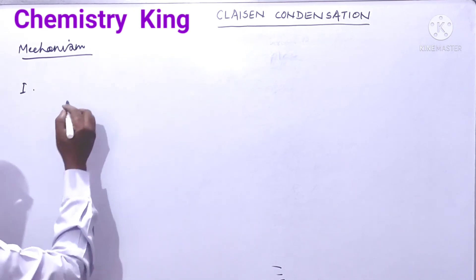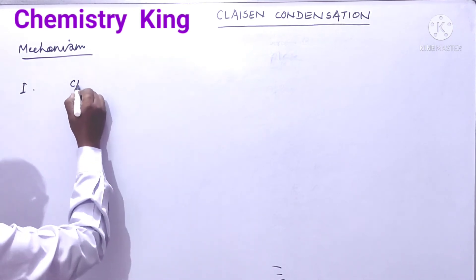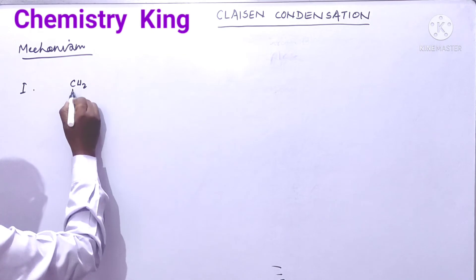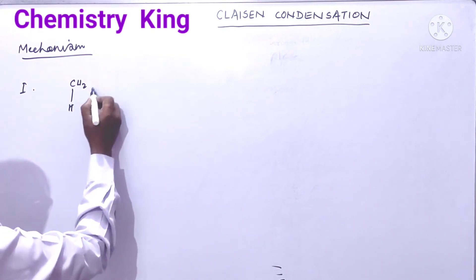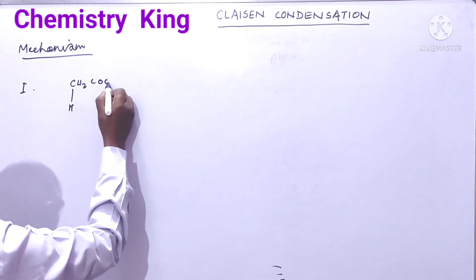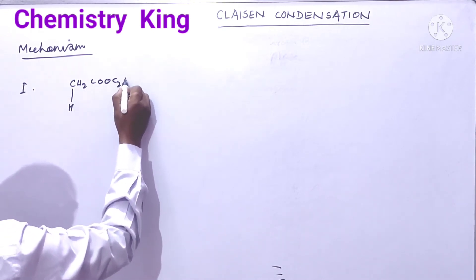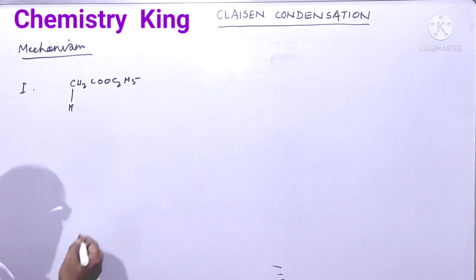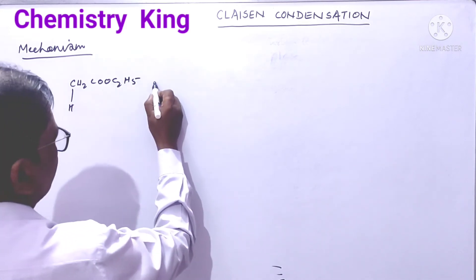In the first step, CH3-CO-OC2H5 — it is ethyl acetate.